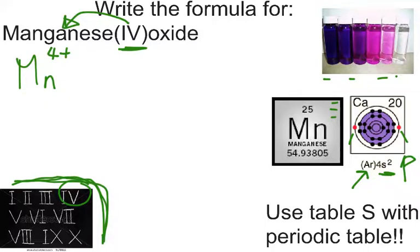So manganese is Mn. And the IV, which is here, IV represents the 4 plus oxidation state. So, we just put that as a superscript up here, 4 plus. The Roman numeral, people, is always, always, always for the first element in the formula. Nothing, it's always for the positive ions. So, this guy, the Roman numeral IV, is always for the positive substance, no matter what it is.